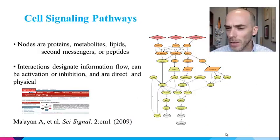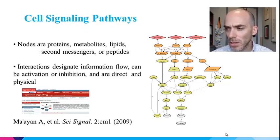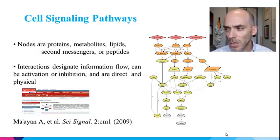Cell signaling pathways are commonly represented as signed mixed graphs, where nodes are mostly proteins but also can be metabolites, lipids, second messengers, or peptides. Interactions designate information flow and can be activation or inhibition. Most of such interactions are direct physical interactions, typically enzymatic or binding.